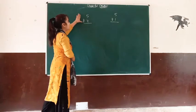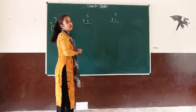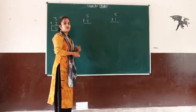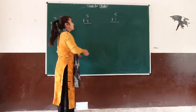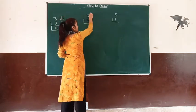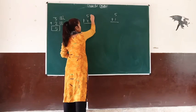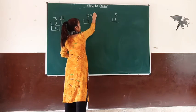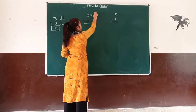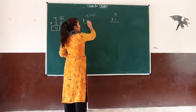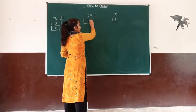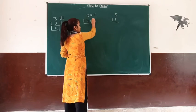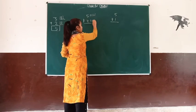Next step: 5 plus 4. Same as before, I am going to go to the other side. We draw 5 lines: 1, 2, 3, 4, 5. Then 4 lines: 1, 2, 3, 4.